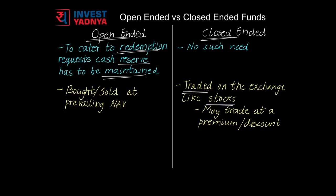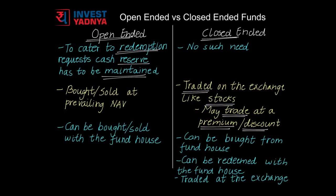But this is not as easy as it sounds. The buying and selling of such units is purely based upon the demand and supply equation, which is influenced by the fund's performance and other market conditions. So, the fund units may trade at a premium or at a discount on the exchange. Whereas, units of open-ended funds can be bought or sold at the prevailing NAV, and this can be done only with the fund house. Closed-ended funds can be bought at NAV during the NFO period from the fund house, redeemed only after the completion of the fund's duration, and meanwhile can be traded on the exchange subject to demand and supply.